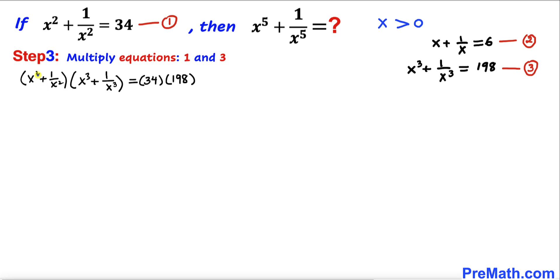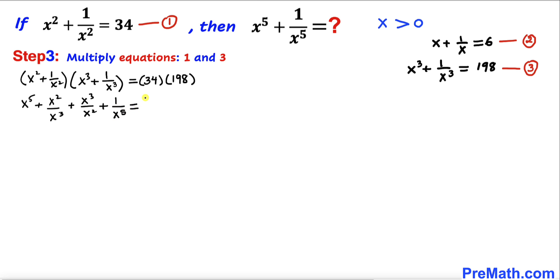Expanding the left side using double distribution gives x⁵ + x²/x³ + x³/x² + 1/x⁵, which simplifies to x⁵ + 1/x + x + 1/x⁵. The right hand side is 34 × 198 = 6732.